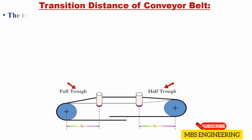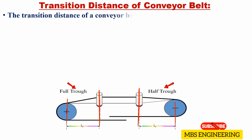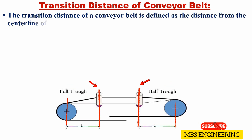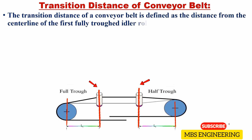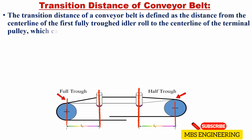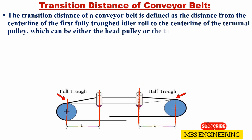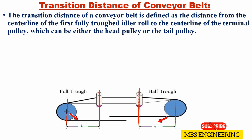The transition distance of a conveyor belt is defined as the distance from the centerline of the first fully troughed idler roll to the centerline of the terminal pulley, which can be either the head pulley or the tail pulley. Please refer to the accompanying pictures for clarification.